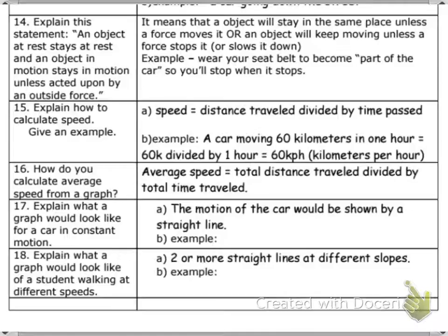Alright. Fifteen, explain how to calculate speed and give an example. Alright, the formula for speed is distance divided by time. And this here says distance traveled divided by time passed, same thing. So a car that's going 60 kilometers in one hour, what's the speed of that? Well, you have 60 kilometers divided by the one hour, and you have 60 kilometers per hour. Alright, that's how you get speed. Distance divided by time.